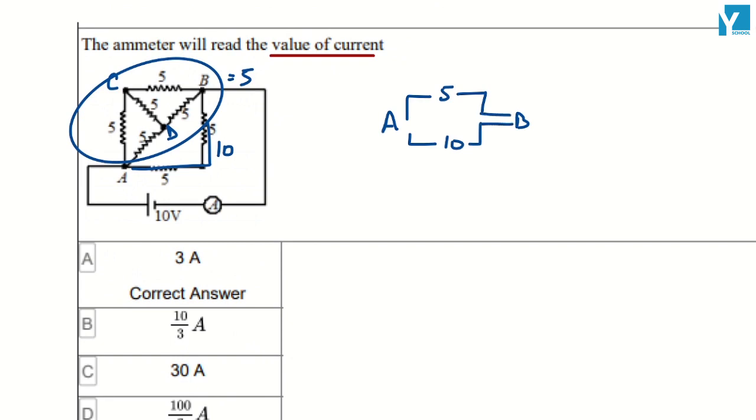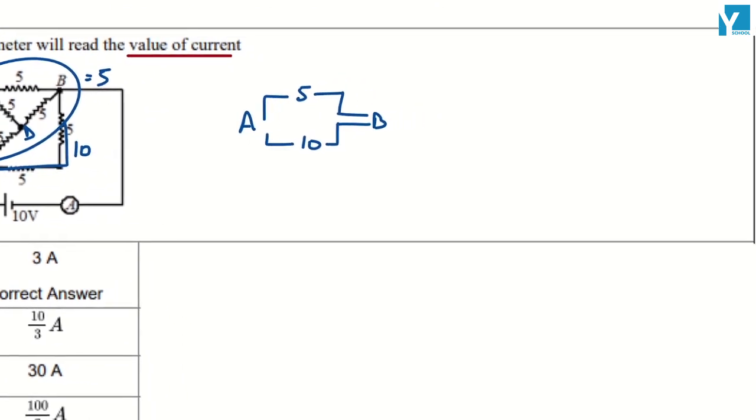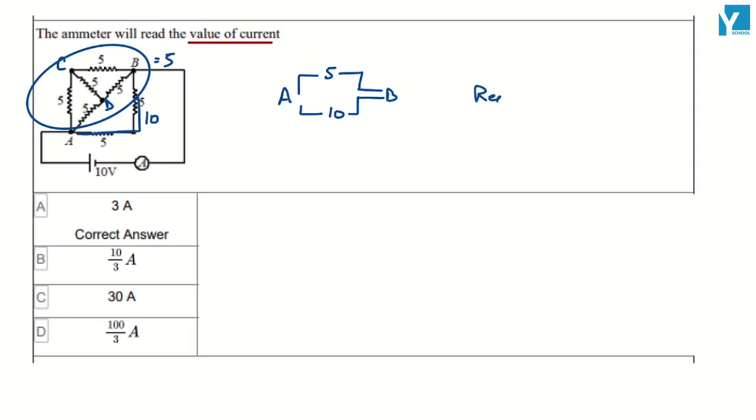There's resistance here, so you can calculate the net resistance which is equal to 10 into 5 upon 10 plus 5.